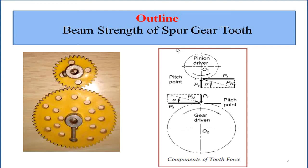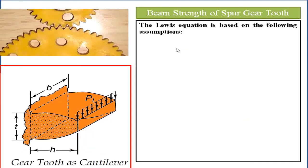Our aim is to find the dimensions of the gear teeth based on force analysis, which is calculated from the total speed, dimensions, and torque transmitted by the gear. Pr is also called the separating force or radial force, and Pt is the tangential force.